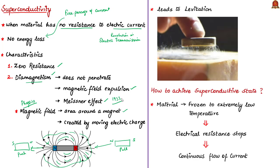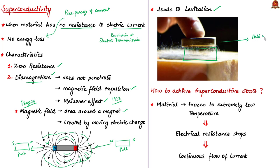This diamagnetic expulsion leads to levitation of a superconductor — levitation is the process by which an object is held aloft in the air without mechanical support in a stable position. To achieve the superconductive state, a material has to be frozen to an extremely low temperature, sometimes to only a few degrees above absolute zero. Then, for reasons still not fully explained, electrical resistance abruptly stops and an electrical current continues to flow without interruption seemingly forever.